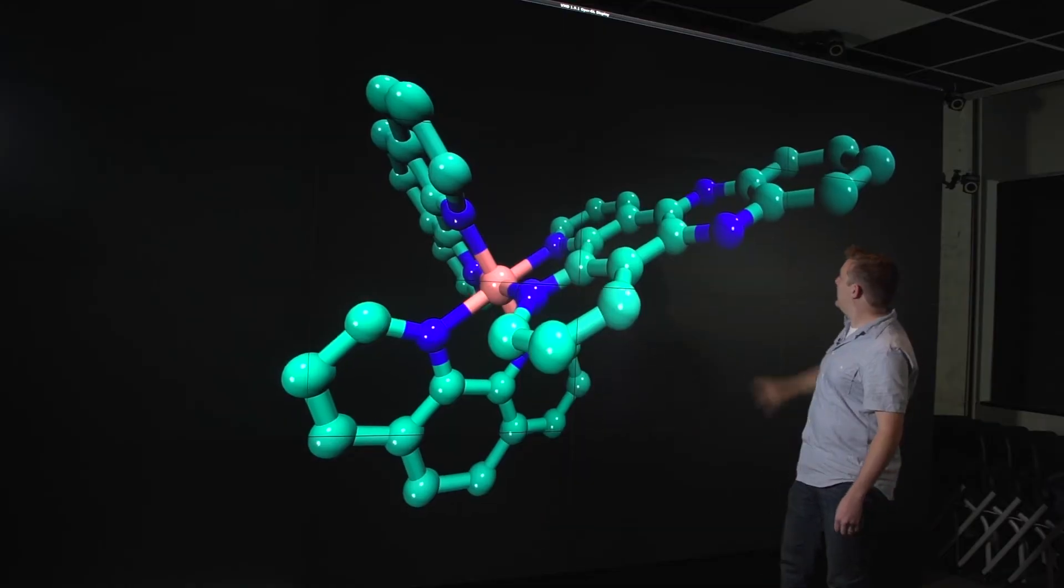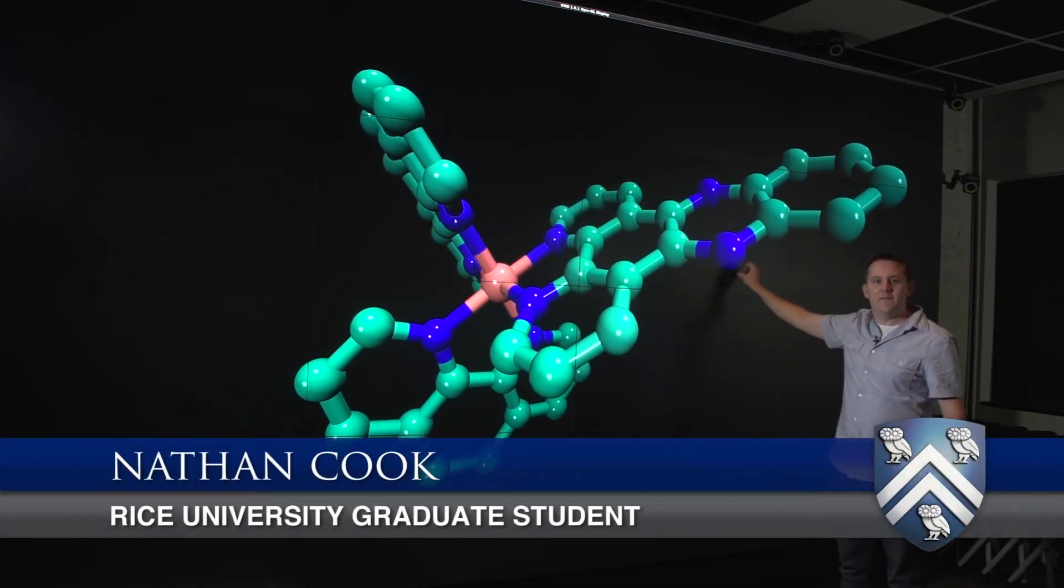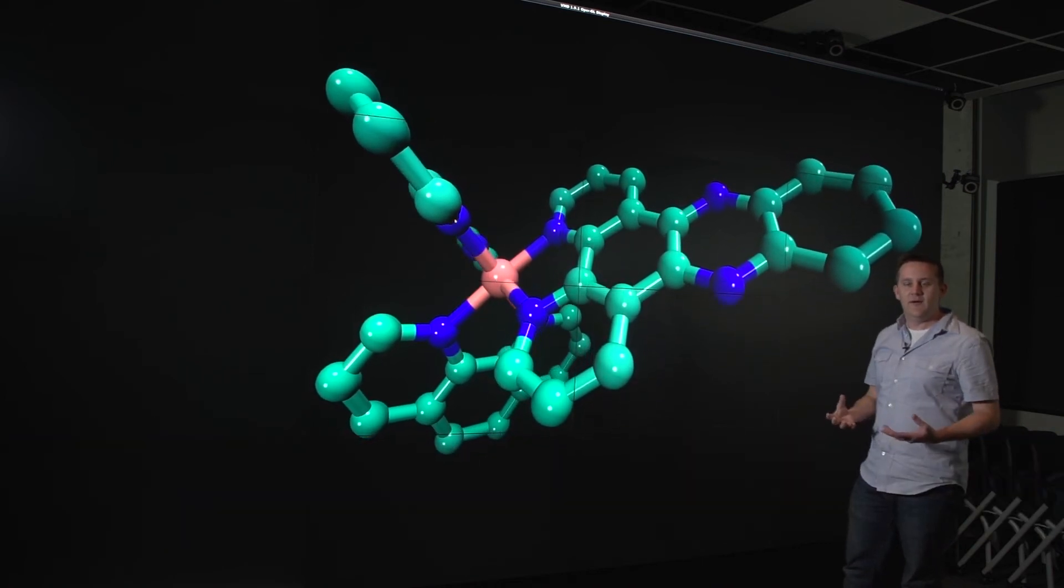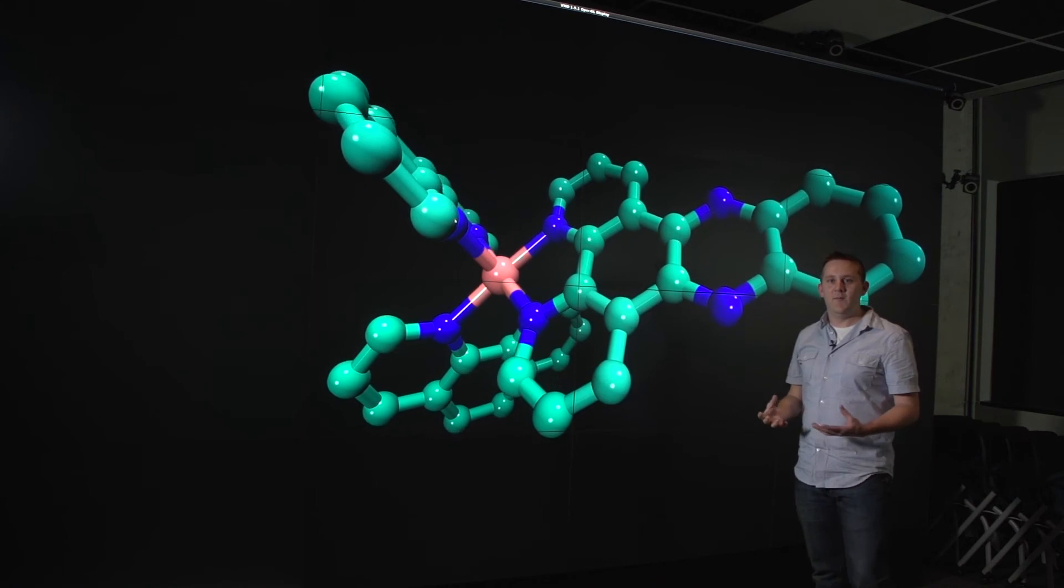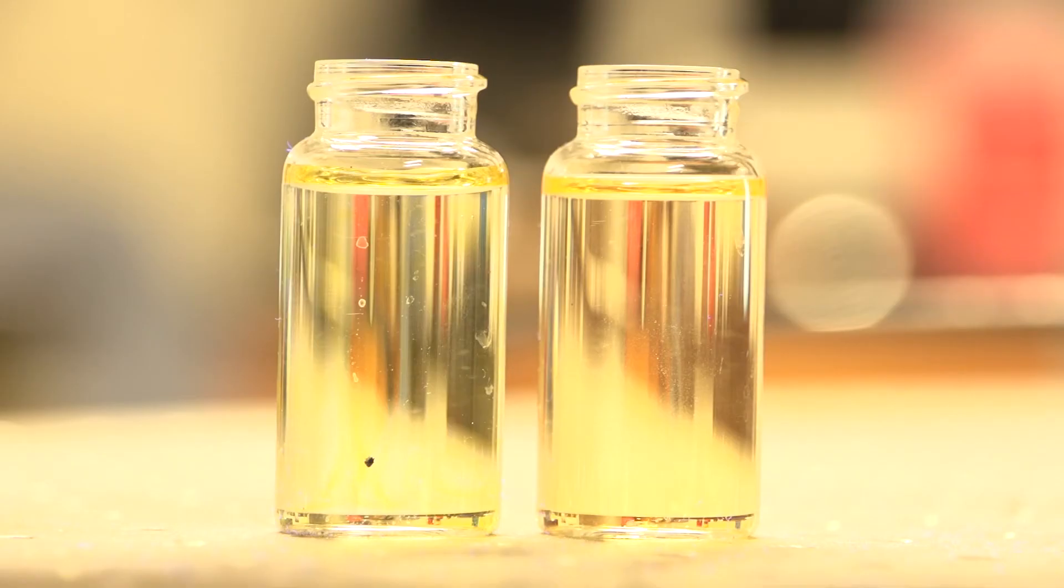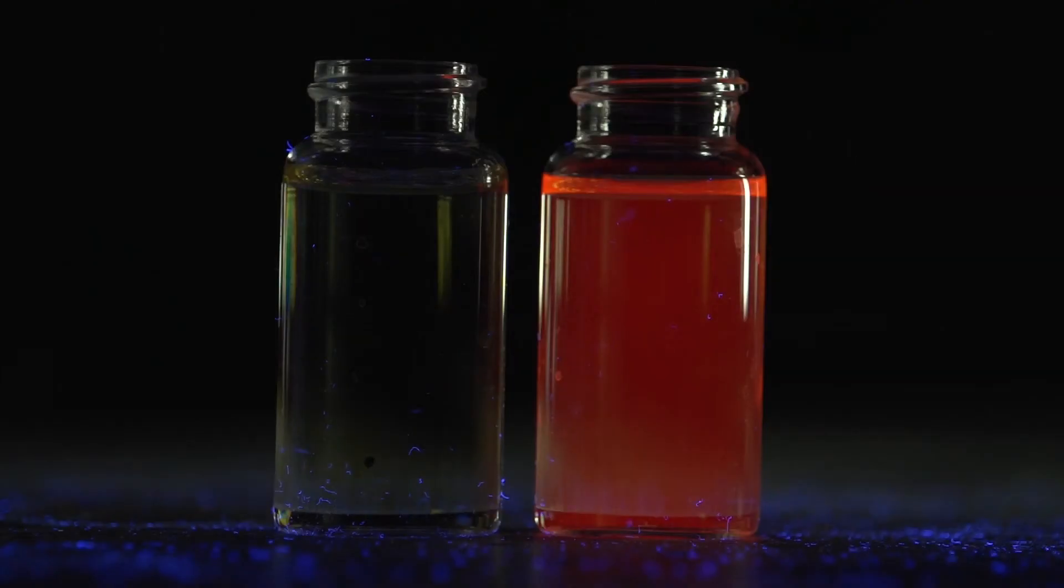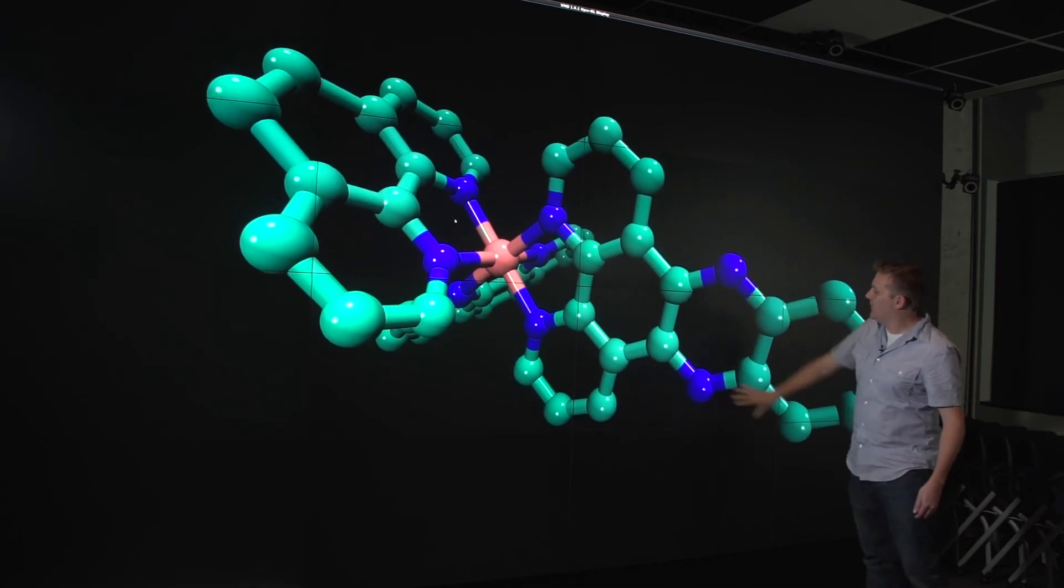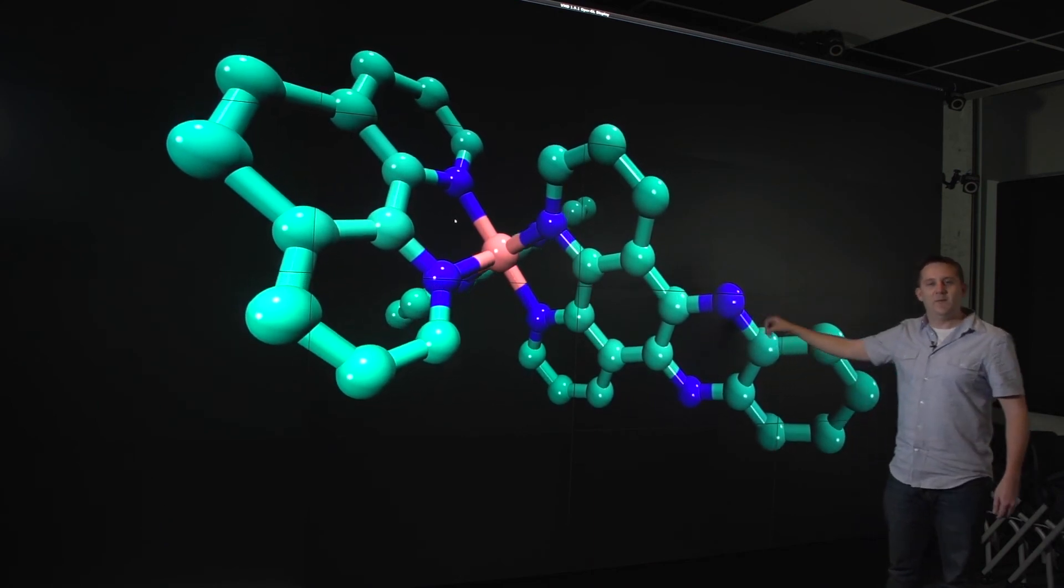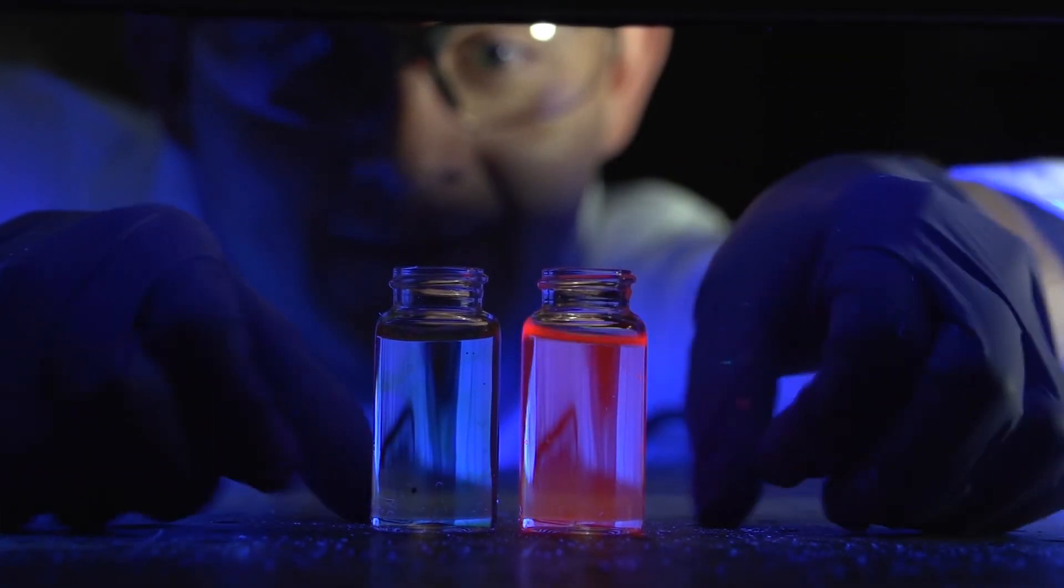This ligand interacts with the alpha-synuclein fibril. When it's floating around in buffer solution, it appears dark in our system. When this part of the molecule interacts with the fibril, it changes the photophysical properties of the compound and allows it to light up and fluoresce. We're taking advantage of the fact that when this part of the molecule is in water, it's totally dark, but when it's in a different environment like a fibrillar protein or certain types of solvents, it lights up with a brilliant reddish-orange color.